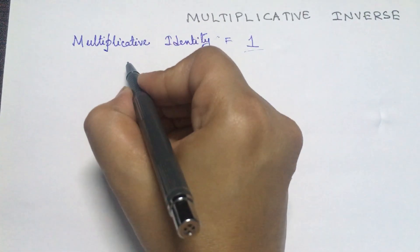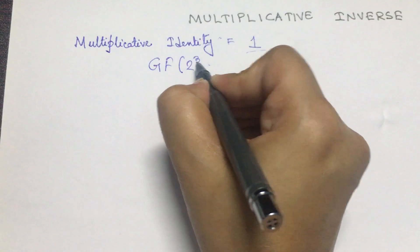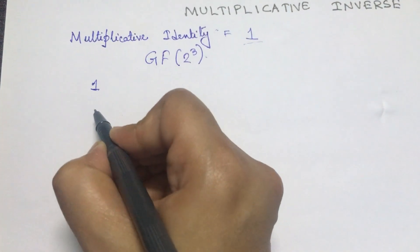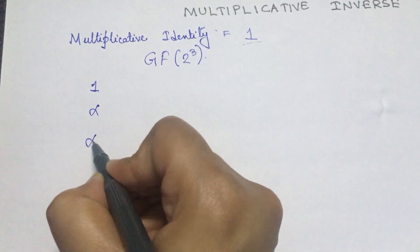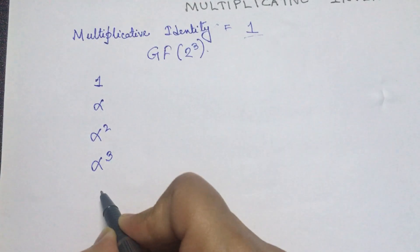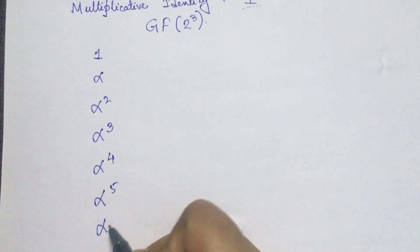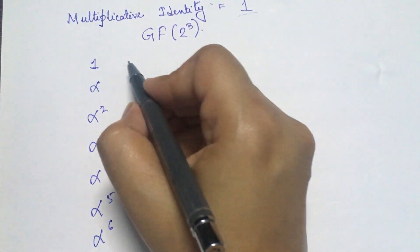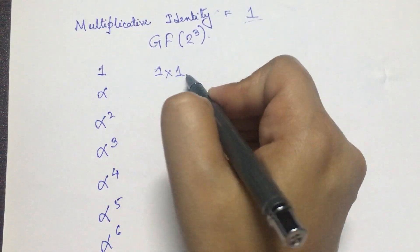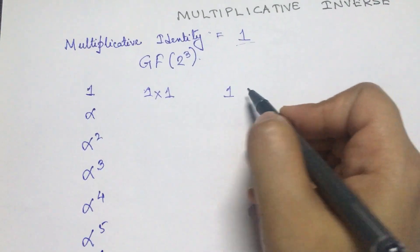If we take the example of GF(2³), which we have already constructed, the non-zero field elements are: 1, α, α², α³, α⁴, α⁵, and α⁶. We already know 1 × 1 = 1, so the multiplicative inverse of 1 is 1 itself.